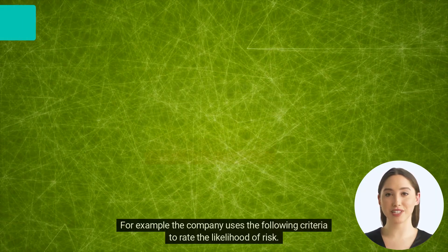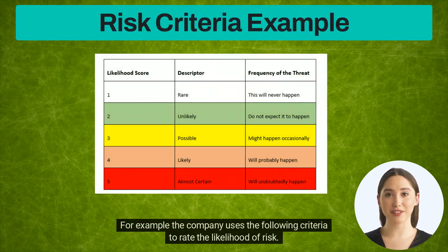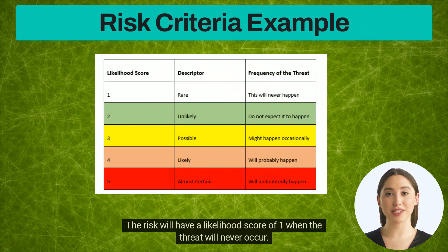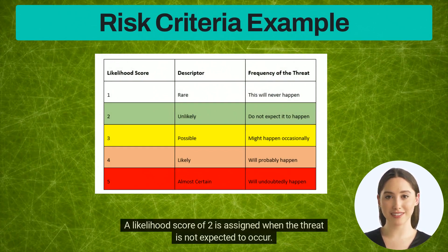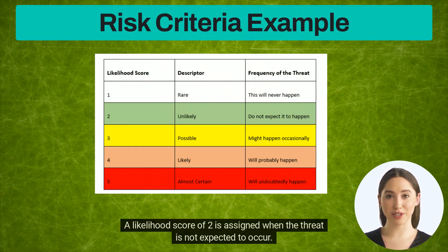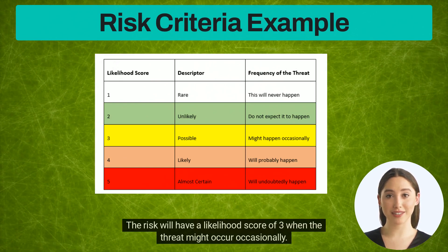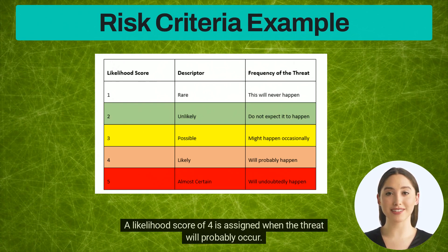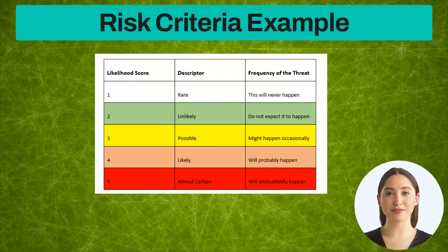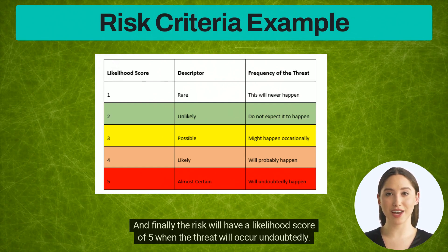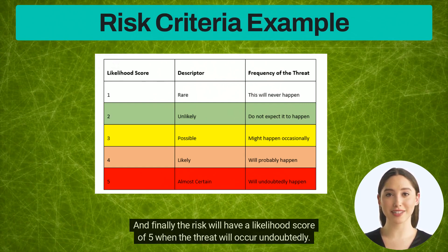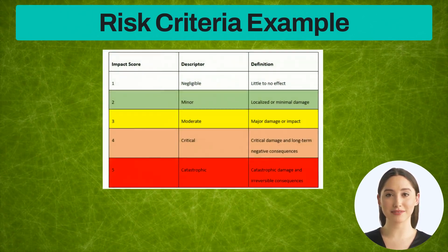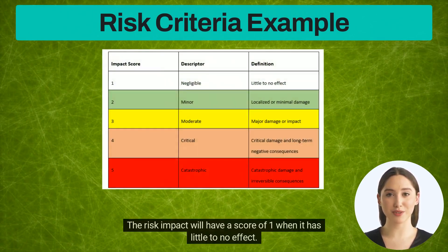For example, the company uses the following criteria to rate the likelihood of risk. The risk will have a likelihood score of one when the threat will never occur. A likelihood score of two is assigned when the threat is not expected to occur. The risk will have a likelihood score of three when the threat might occur occasionally. A likelihood score of four is assigned when the threat will probably occur. And finally, the risk will have a likelihood score of five when the threat will occur undoubtedly.